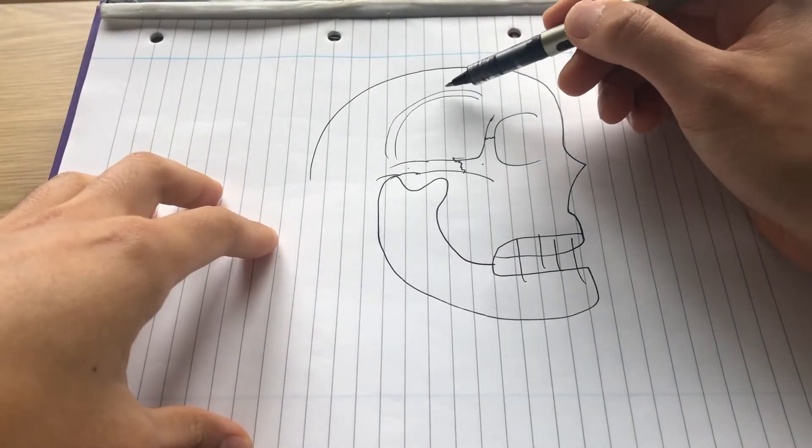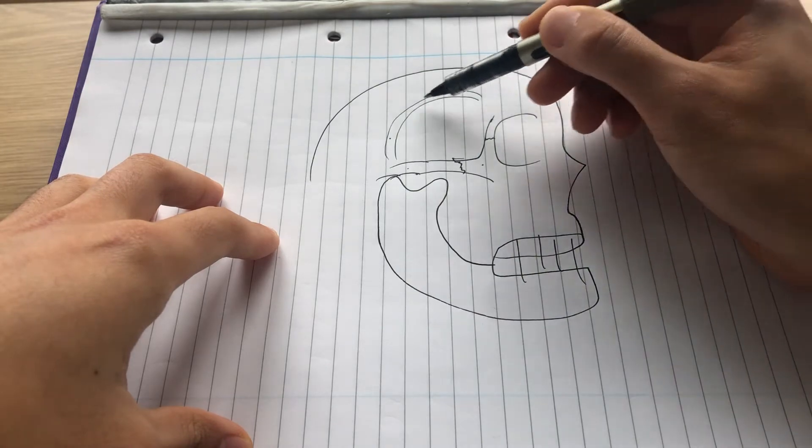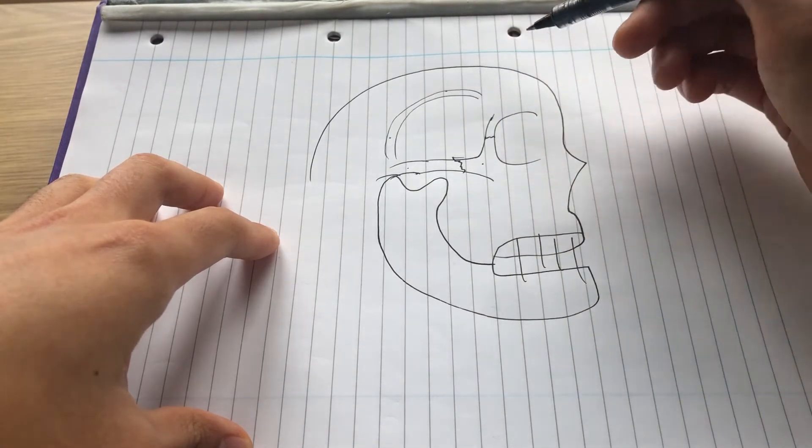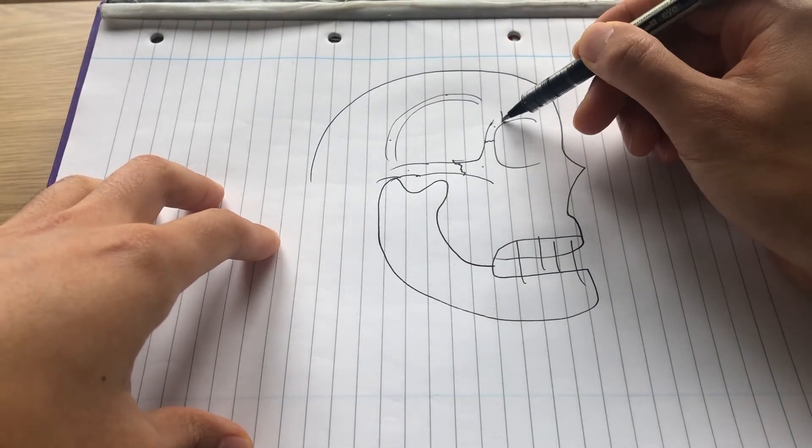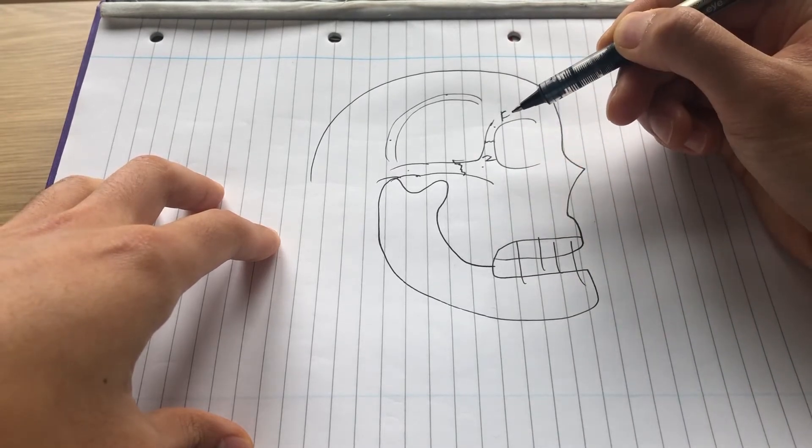It's bordered superiorly and posteriorly by the superior and inferior temporal lines. Anteriorly, it's bordered by the frontal bone and the zygomatic bone.